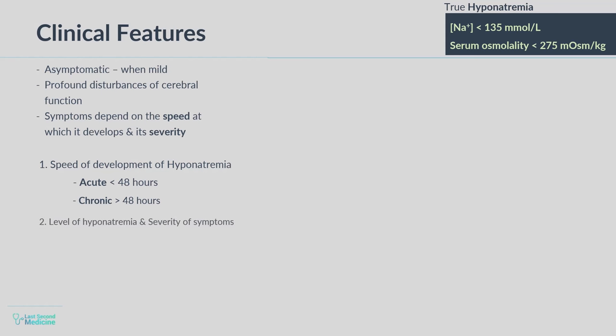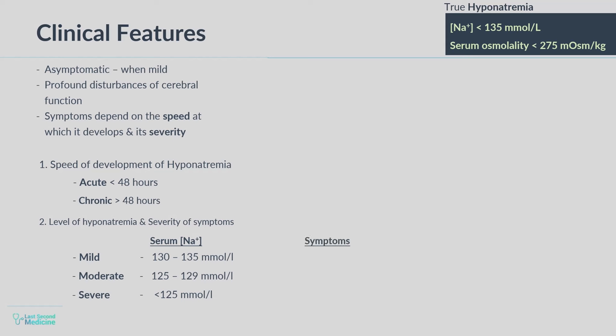Based on biochemical findings or the degree of severity of symptoms, hyponatremia can also be defined as mild, moderate, and severe. Mild hyponatremia is when serum sodium is 130 to 135 millimol per liter; moderate when serum sodium is 125 to 129; and severe when serum sodium is less than 125 millimol per liter. Mild hyponatremia may not have any symptoms; moderate may present with nausea, headache, and delirium; while severe hyponatremia presents with vomiting, somnolence, seizures, coma, and cardiorespiratory arrest.